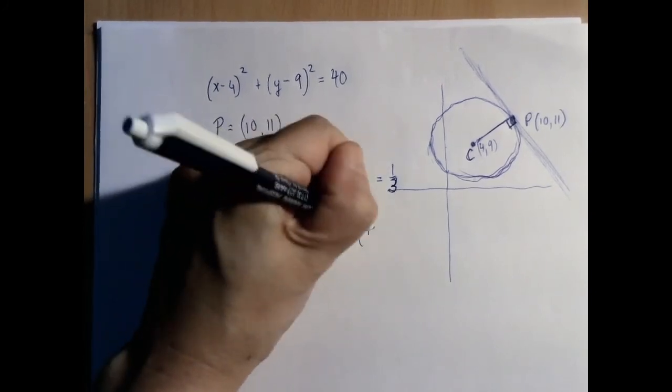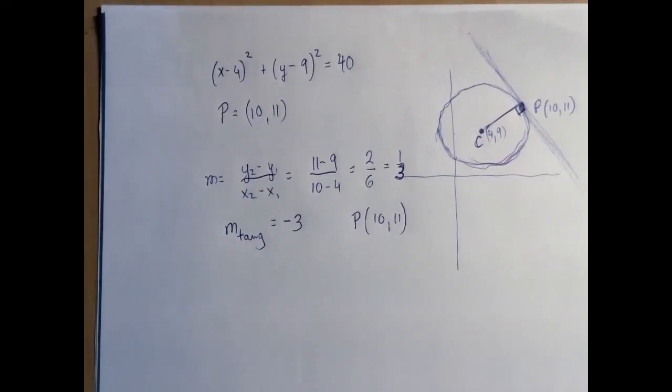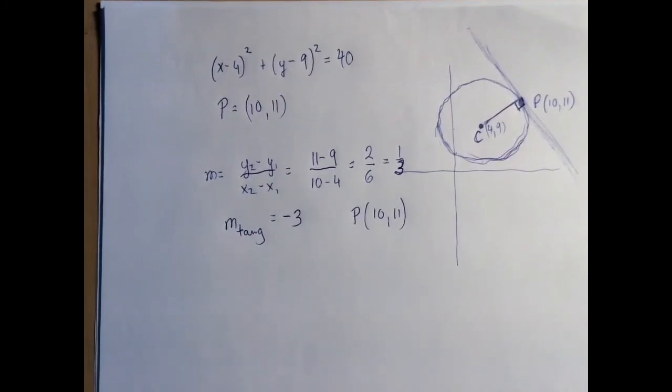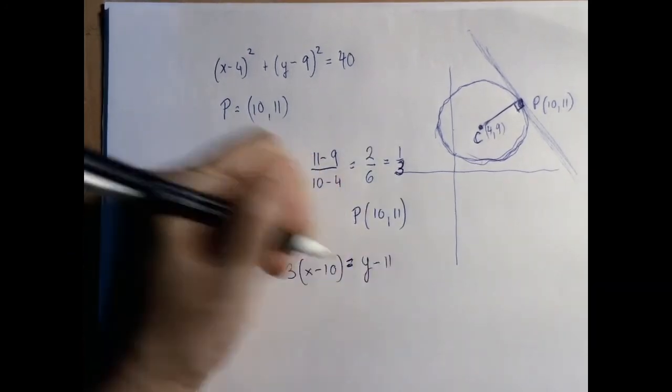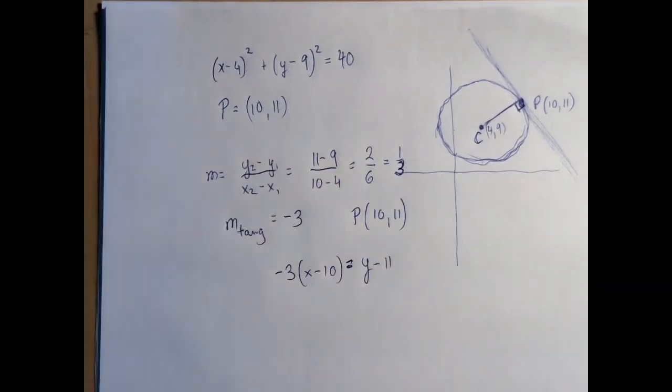It goes through the point 10, 11. And so the point slope form of the equation would be negative 3 times x minus 10 equals y minus 11.